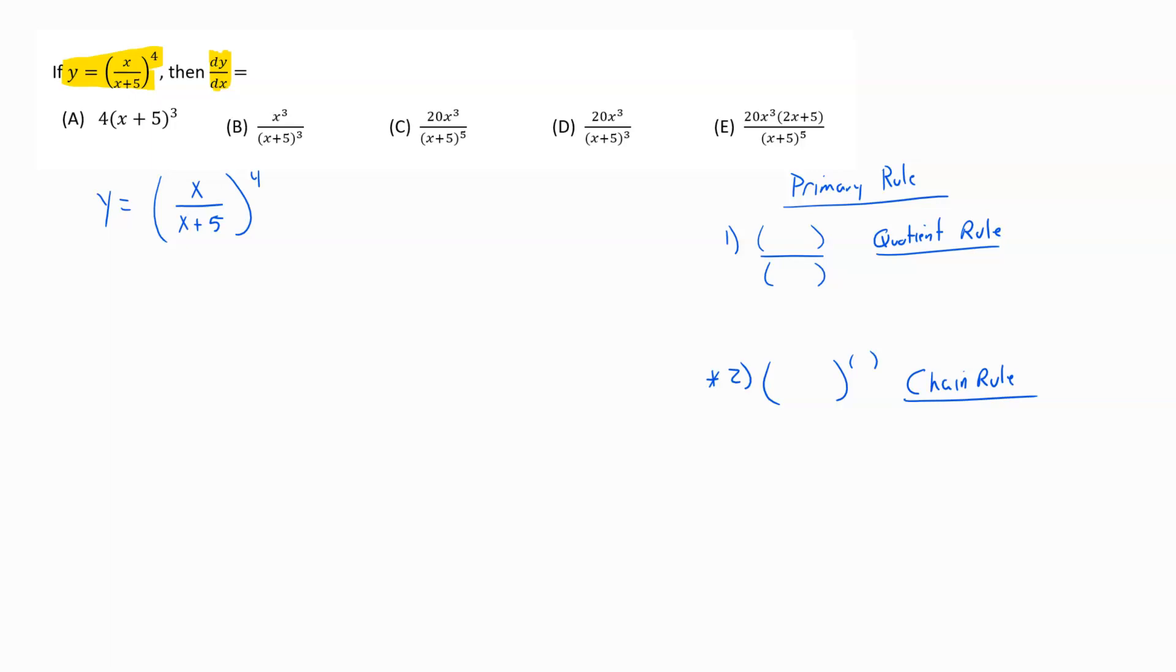The quotient rule is inside that chain rule. You had to look past that fourth power to get to the quotient rule. So the chain rule is our main rule. My recipe for the chain rule goes d in times d out. The derivative of whatever is inside those parentheses times the derivative of the outside.